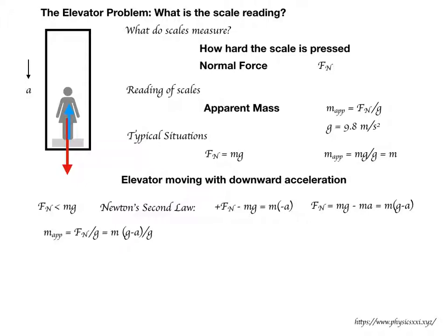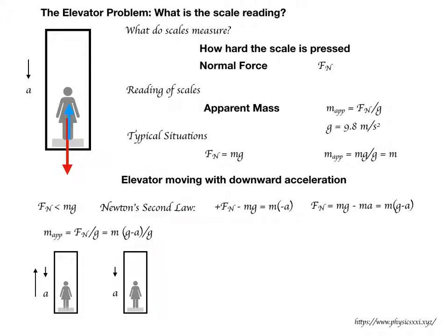This is not to say that your actual mass has changed — it simply means that the interaction between your feet and the scale has changed and no longer reflects what it normally would. Note that this expression depends only on the direction of the acceleration, not the velocity. You can have the elevator moving upward while slowing down, or moving downward while speeding up — in both cases the acceleration is downward, the normal force is less than the gravitational force, and our equation for the apparent mass still holds.